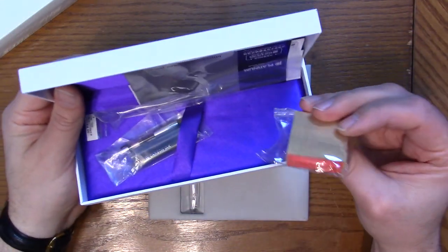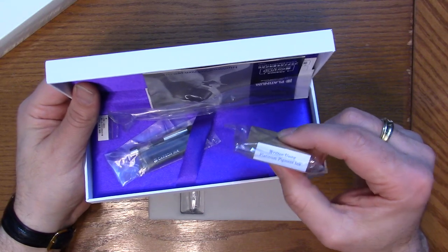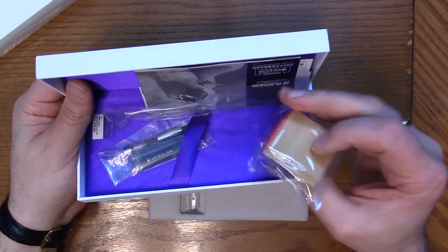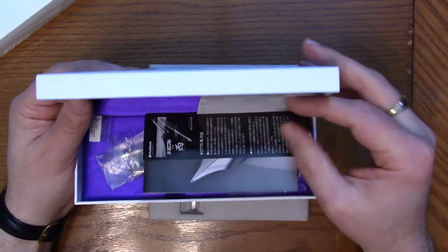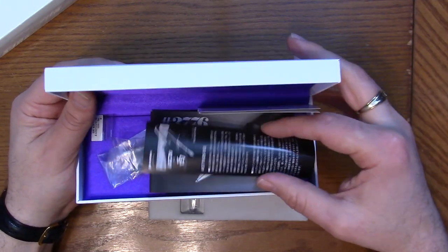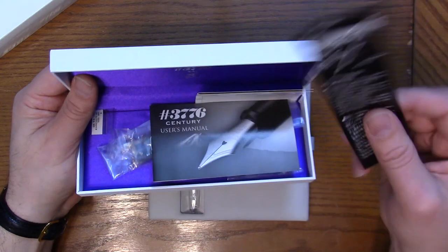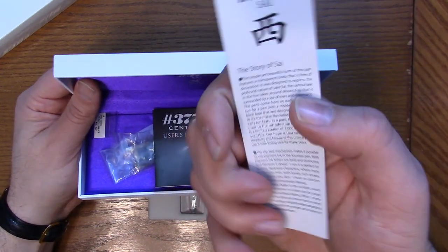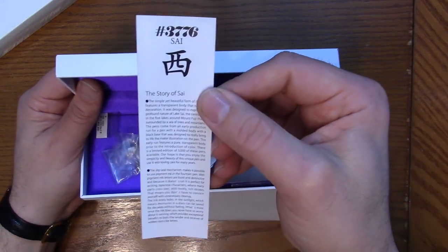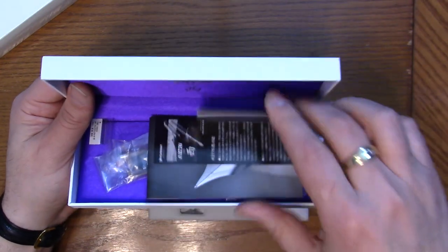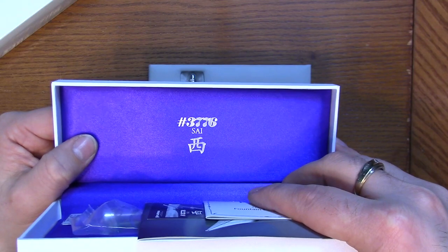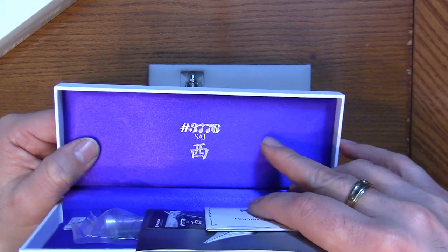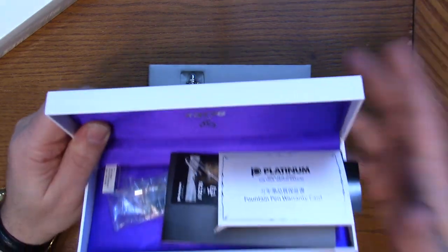And this particular one happens to come with a stamp that says written using Platinum pigment ink which is kind of cute. Warranty information and all the standard user manual and a little book here about the story of Psi. Purple lining and specific to the pen 3776 Psi on there. So nice box.